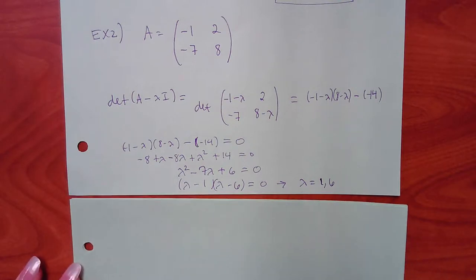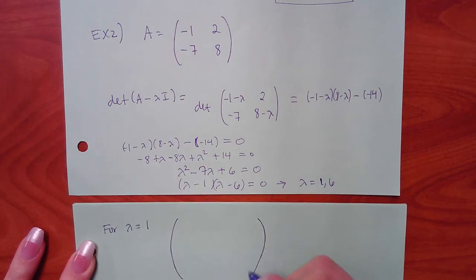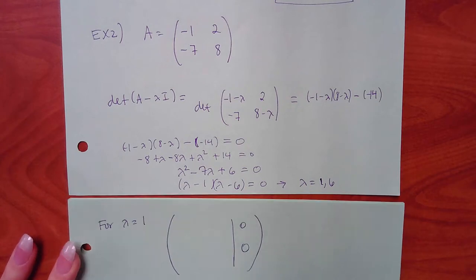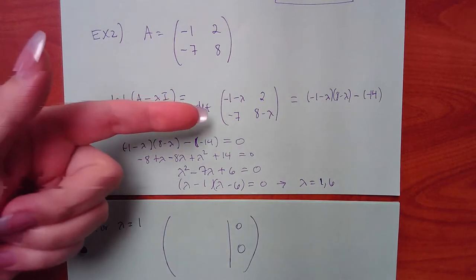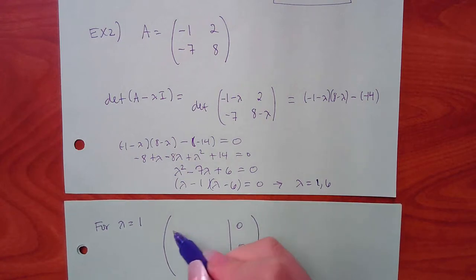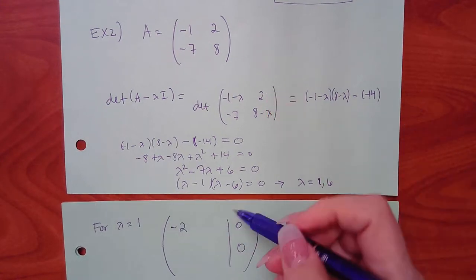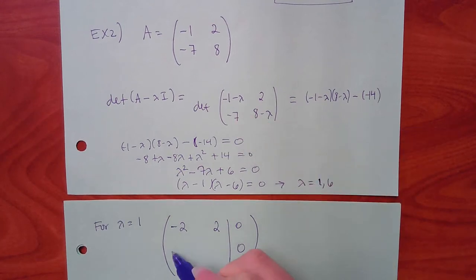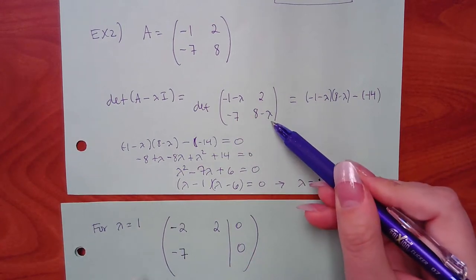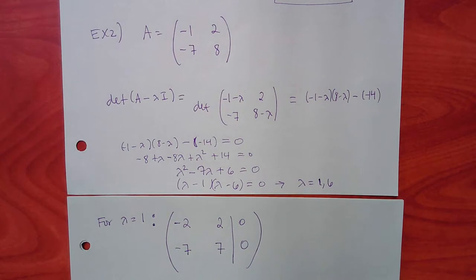For lambda equal to 1: plug into the matrix with minus lambdas. Negative 1 minus 1 is negative 2; the off-diagonal entries stay the same; 8 minus 1 is 7. Set up the augmented matrix with zeros on the right.